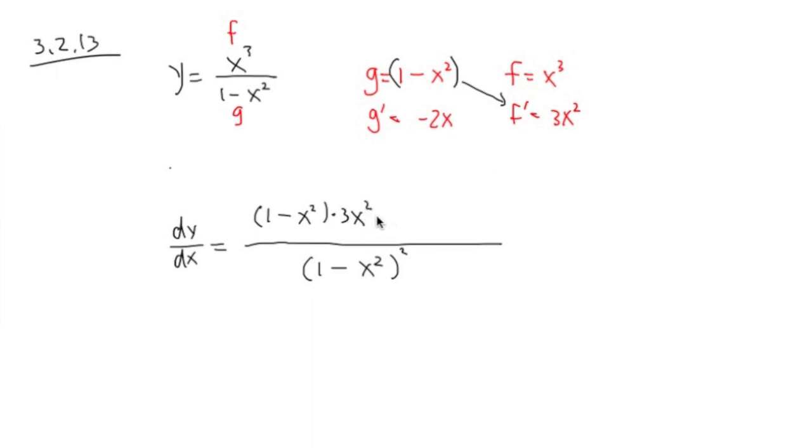And for quotient rule, you are going to subtract. You pair this one with that together. So you subtract x to the third power times negative 2x. And let me use parenthesis accordingly.